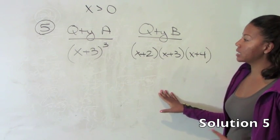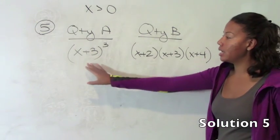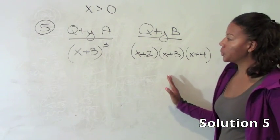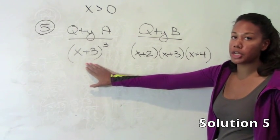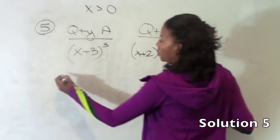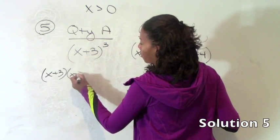So remember for quantitative comparison, the goal is to compare, not necessarily to calculate the answers. So we want our two problems to be as similar as possible in form. So it's easiest to multiply or expand out the x plus 3 cubed.